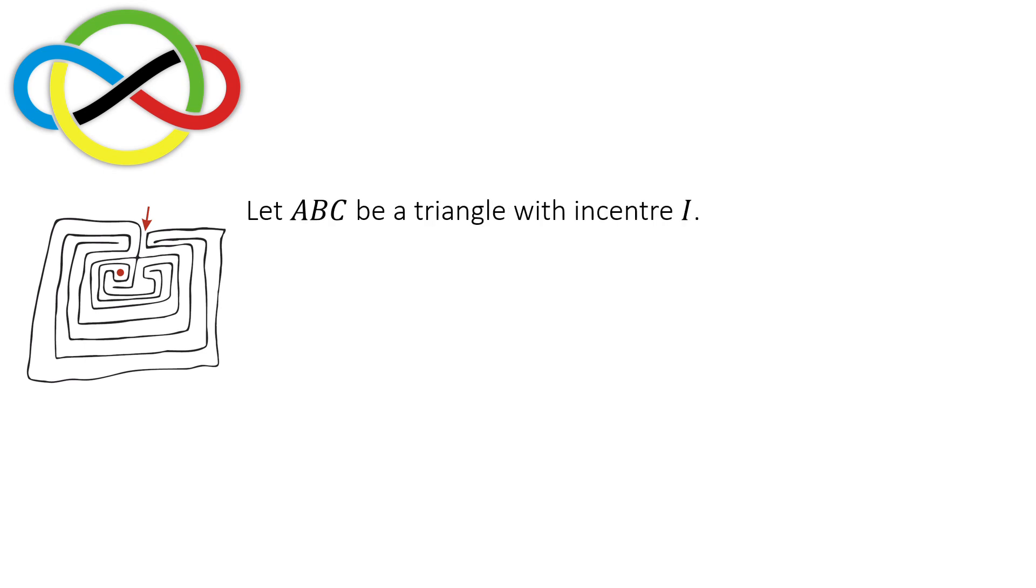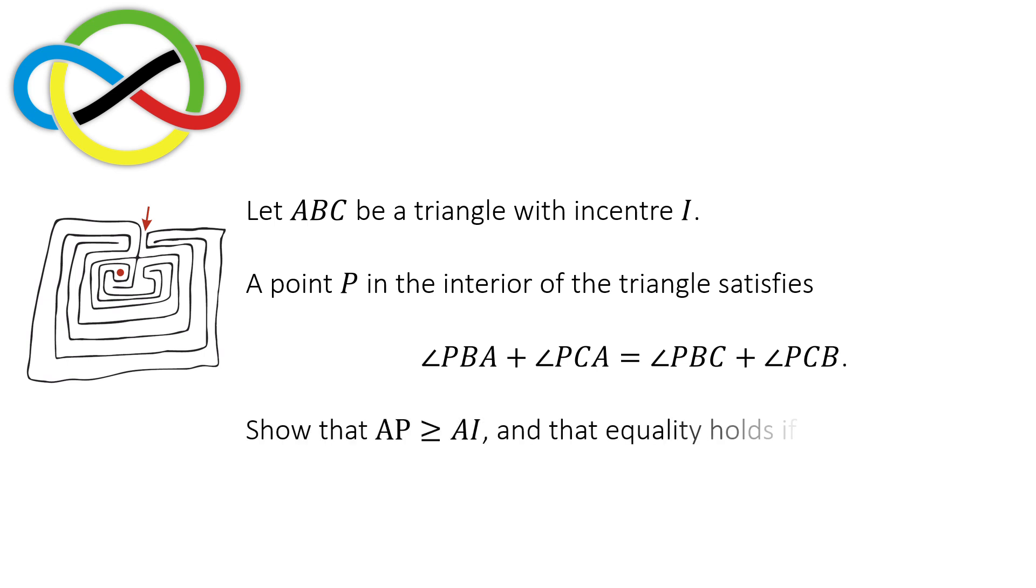Let ABC be a triangle with incenter I. A point P in the interior of the triangle satisfies angle PBA plus angle PCA equals angle PBC plus angle PCB. Show that AP is greater than or equal to AI, and that equality holds if and only if P equals I.